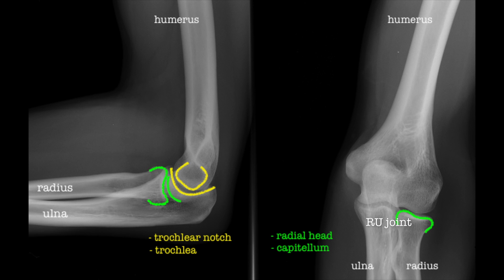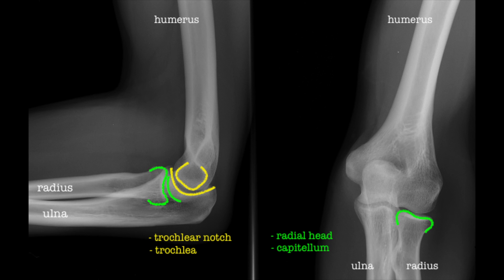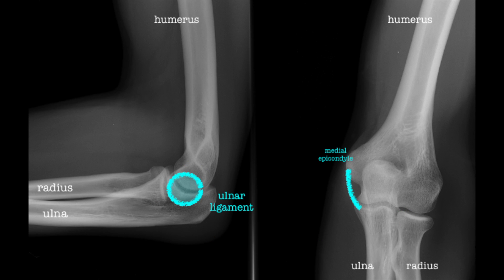Stabilization of the joint is mostly offered by the capsule enclosing the joint. There are collateral ligaments both medially and laterally. The medial collateral ligament is also known as the ulnar collateral ligament, and the lateral collateral ligament is also known as the radial collateral ligament. The radial collateral ligament blends in with the ligament that lies proximal to the radial-ulnar joint — the annular ligament.